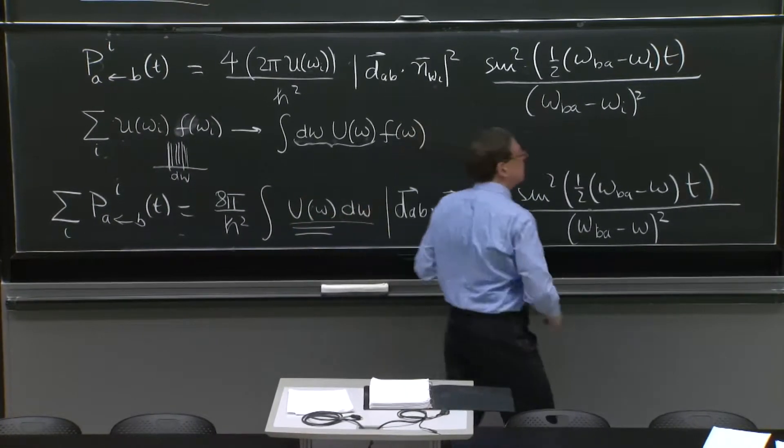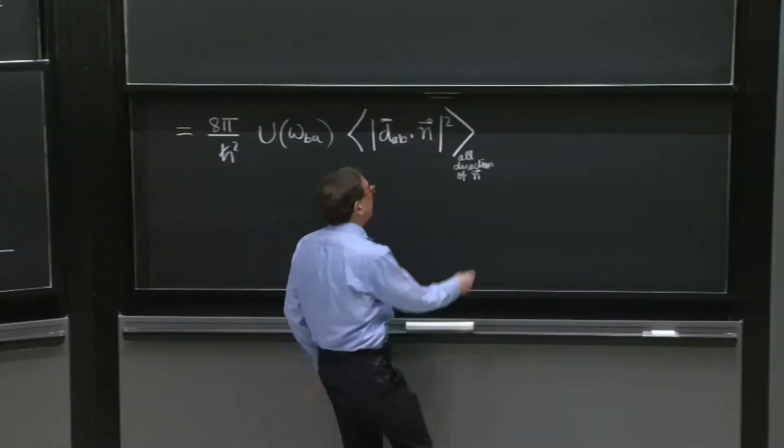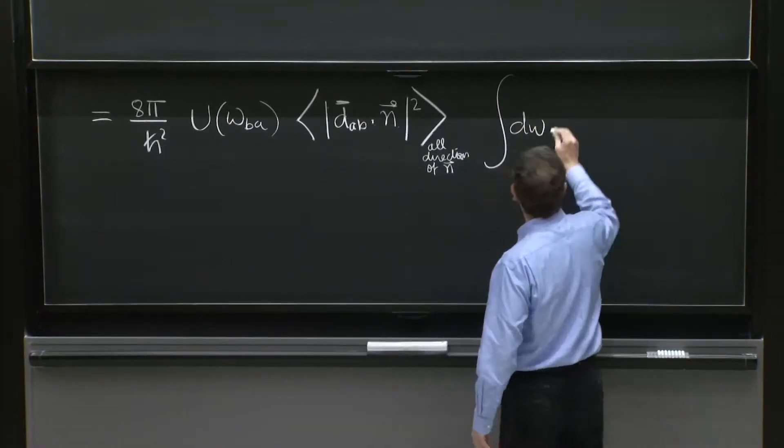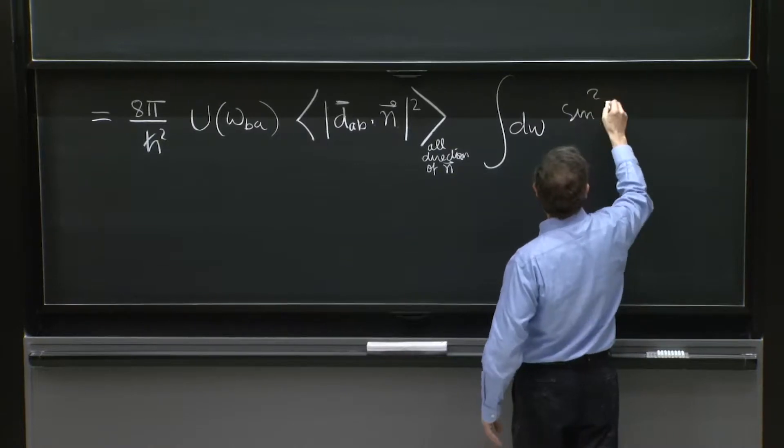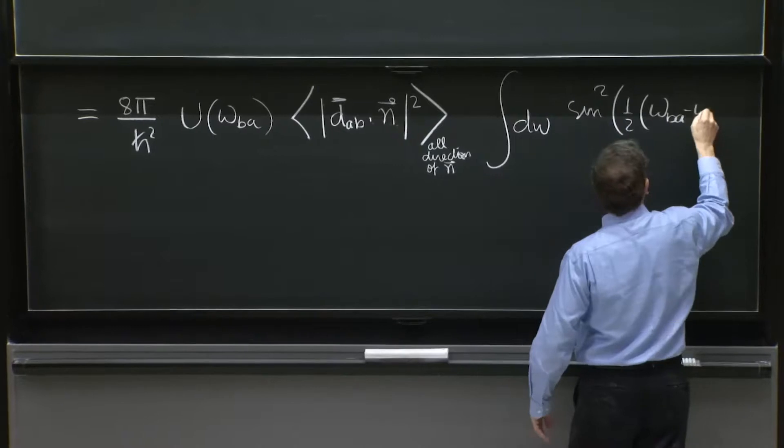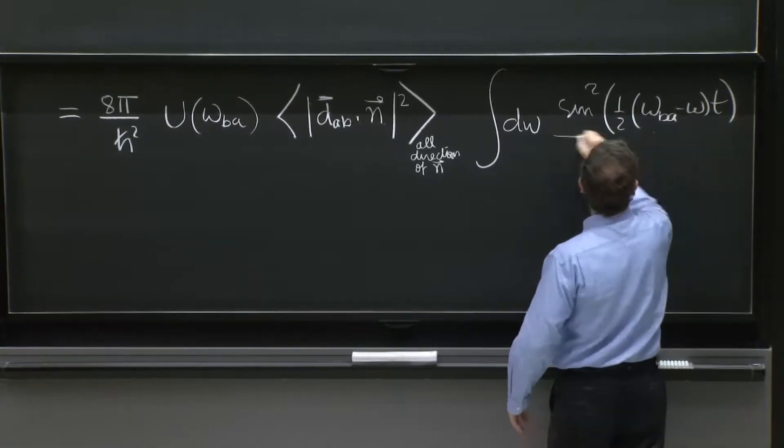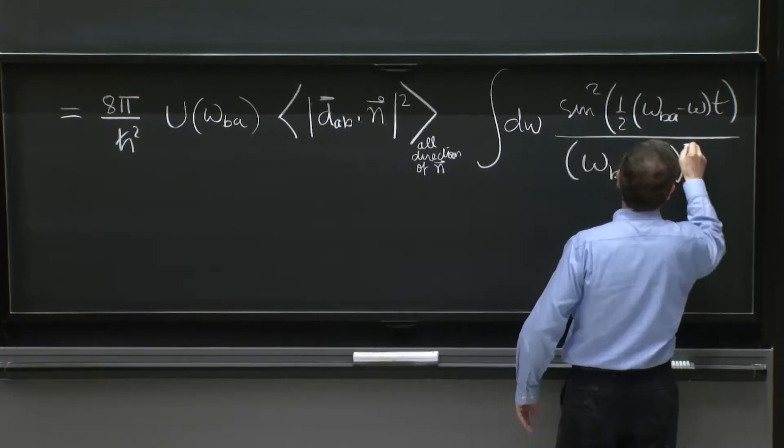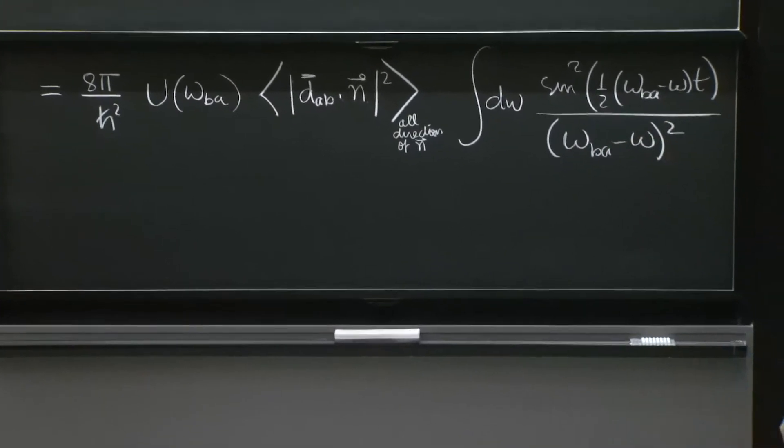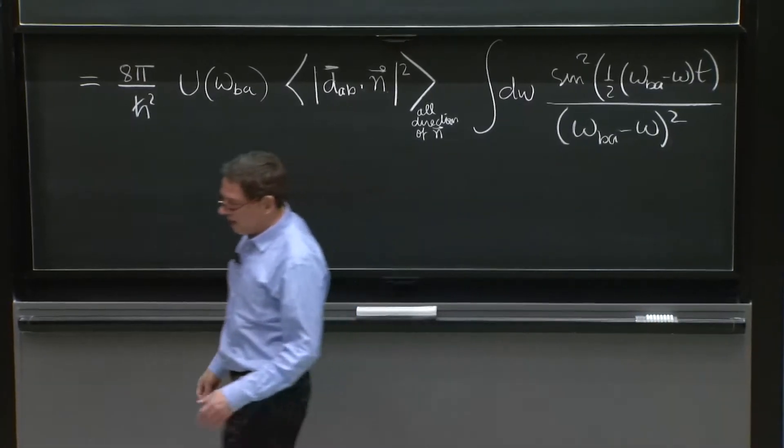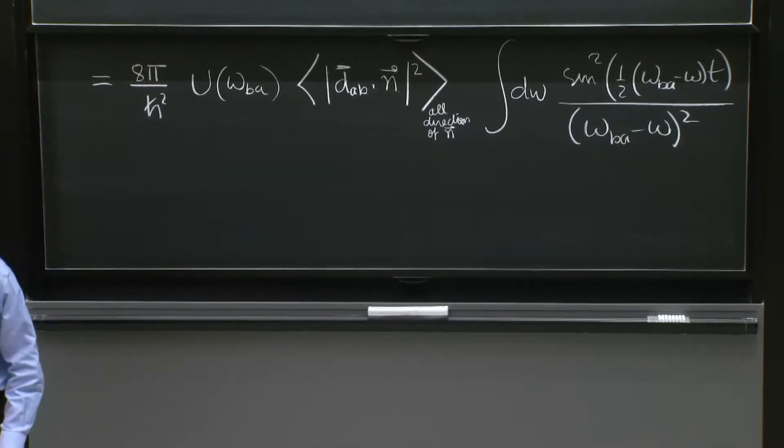So this is important, because the field comes in all directions. We've taken care of this. Then finally, we have the integral of the omega of the sine squared function. A couple of things still remain to be done.